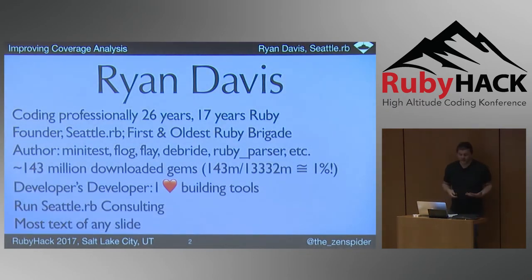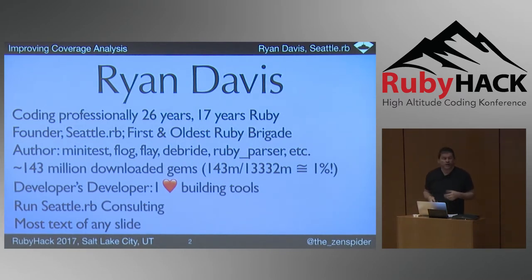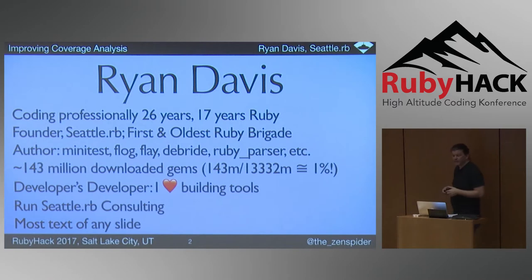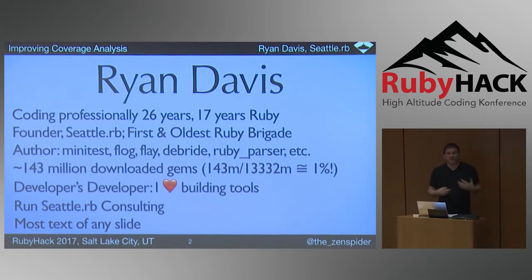A little bit about me. I've been coding professionally for 26 years, 17 years in Ruby. I'm the founder of Seattle RB, the first and oldest Ruby brigade in the world. I'm the author of Minitest, Flog, Flay, Debreed, Ruby Parser, and about 90 other gems. I have about 143 million downloaded gems, which at current count is about 1% of all gem downloads. I'm a developer's developer — I love building tools.